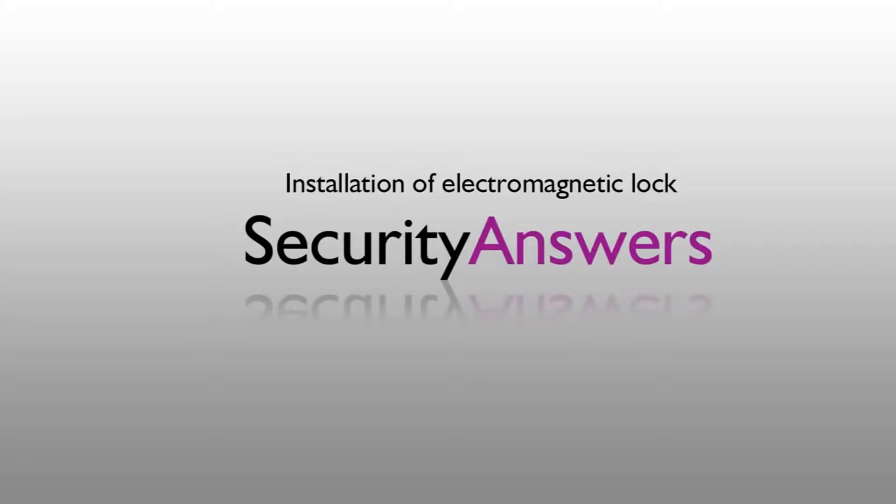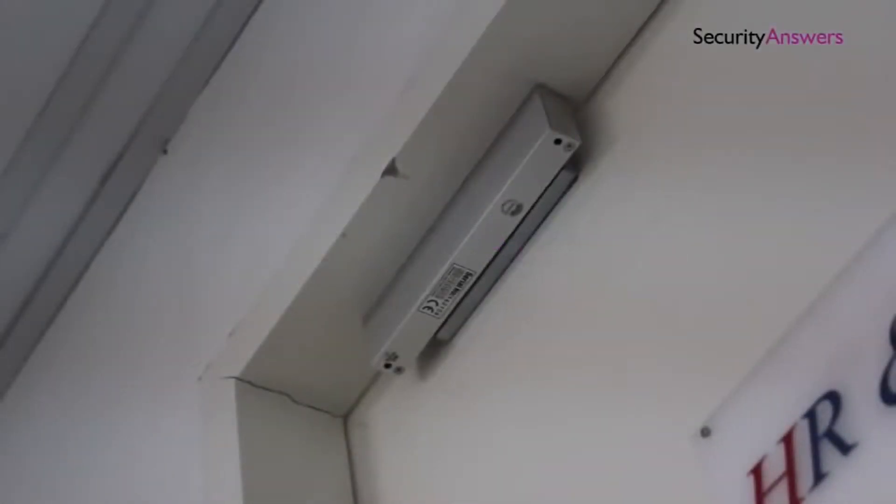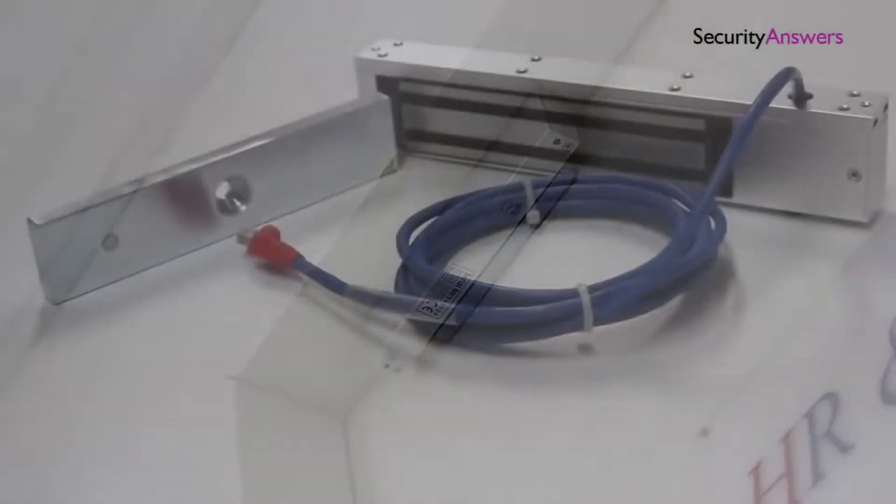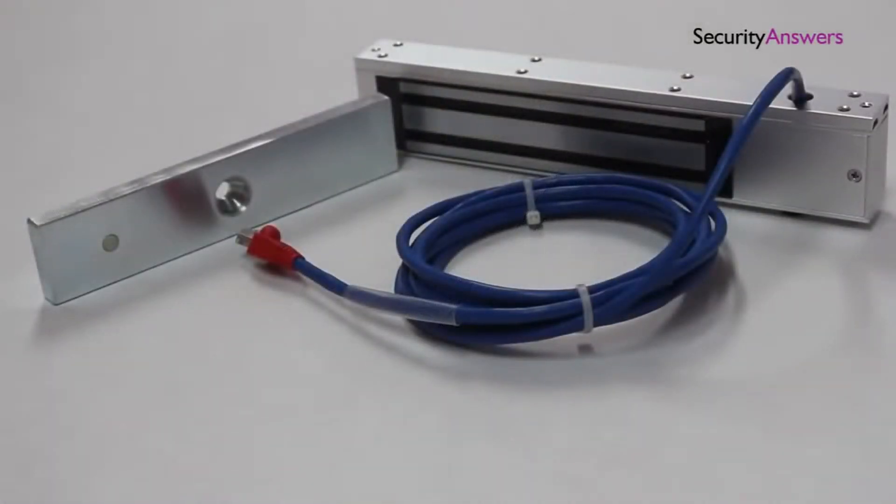In this video we will look at how to install an electromagnetic lock to a door and doorframe of an access control system. We will be using an EM lock from AXS Pro.